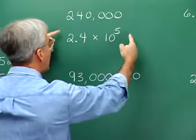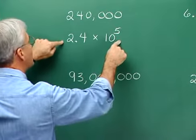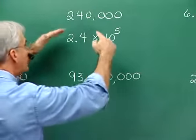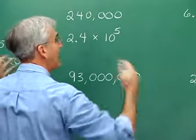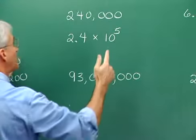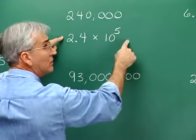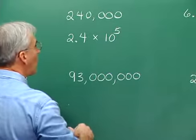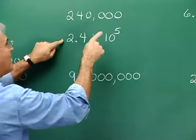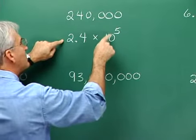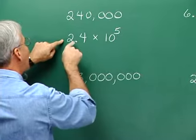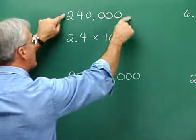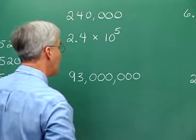We can verify that this is the scientific notation form for that number by changing it back. If we take 2.4 and multiply times ten to the fifth, we would have to slide this decimal five to the right, and we would certainly get 240,000.